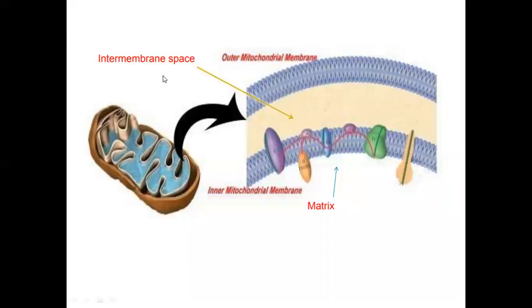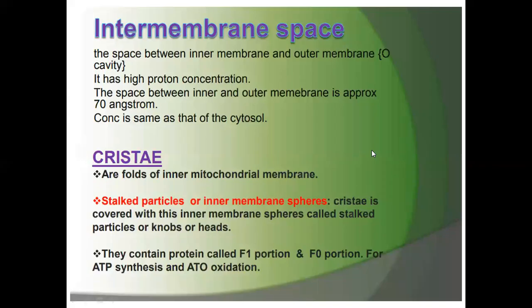The intermembrane space is present between the outer mitochondrial membrane and inner mitochondrial membrane. The space between the inner membrane and the outer membrane is called the intermembrane space, or O-cavity. It has a high proton concentration. The space between the inner and outer membrane is approximately 70 angstrom units, and its concentration is the same as that of the cytosol.